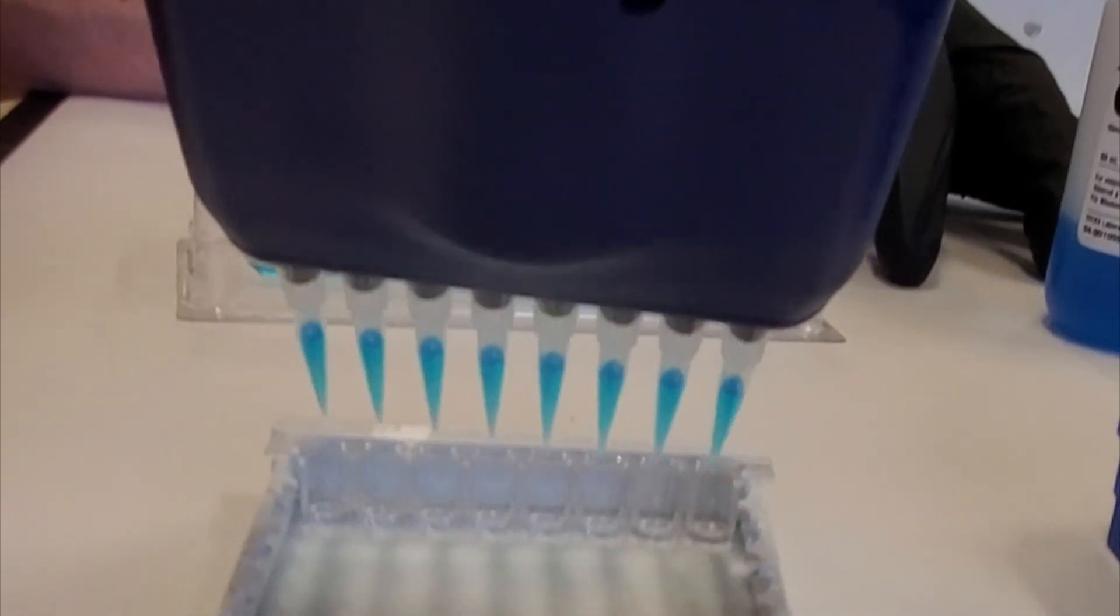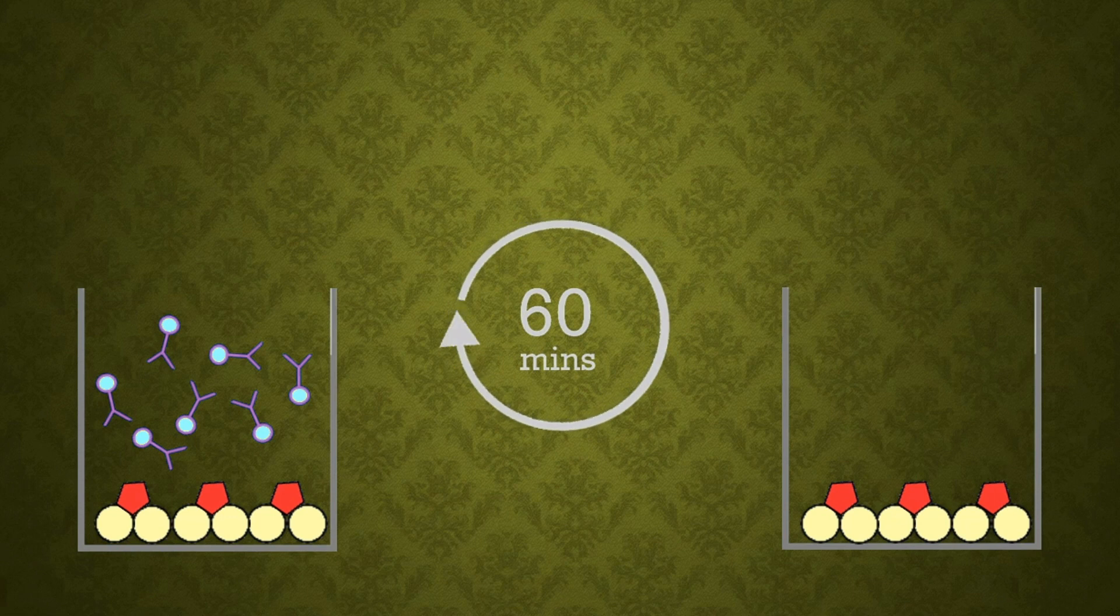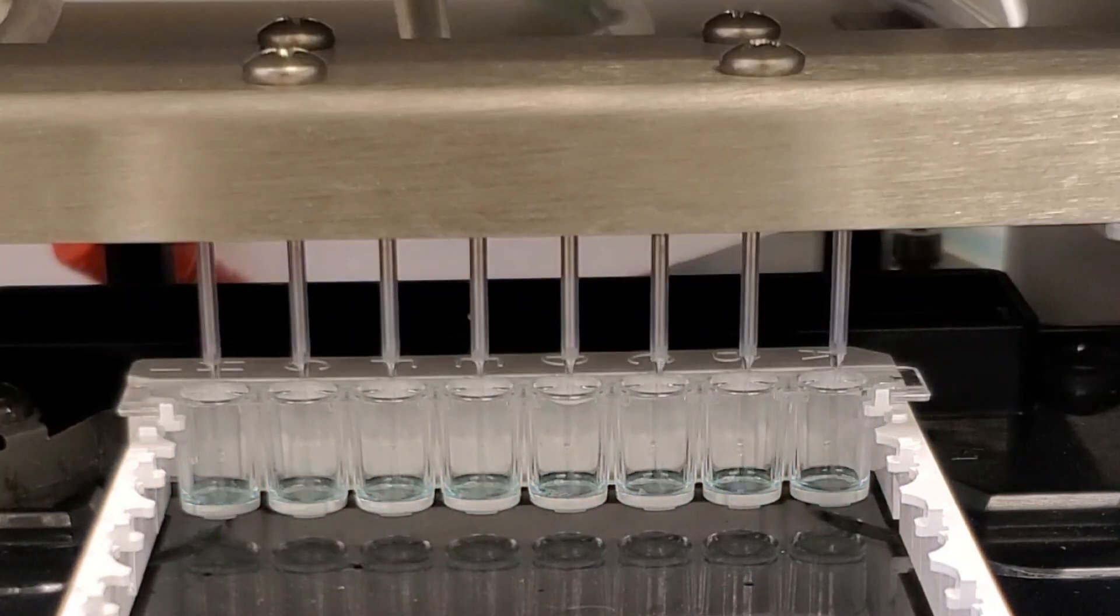We then add enzyme conjugated antibody. After 60 minutes, the antibody with the conjugated enzyme binds to the mutated CWD prion. The plate is washed a third time to remove any conjugate that did not attach.